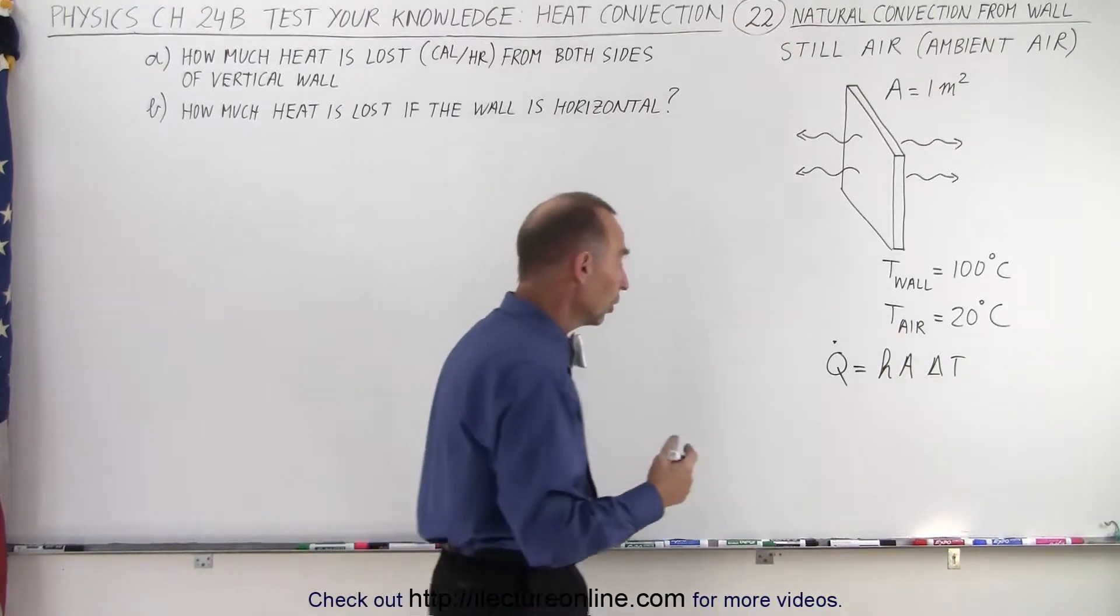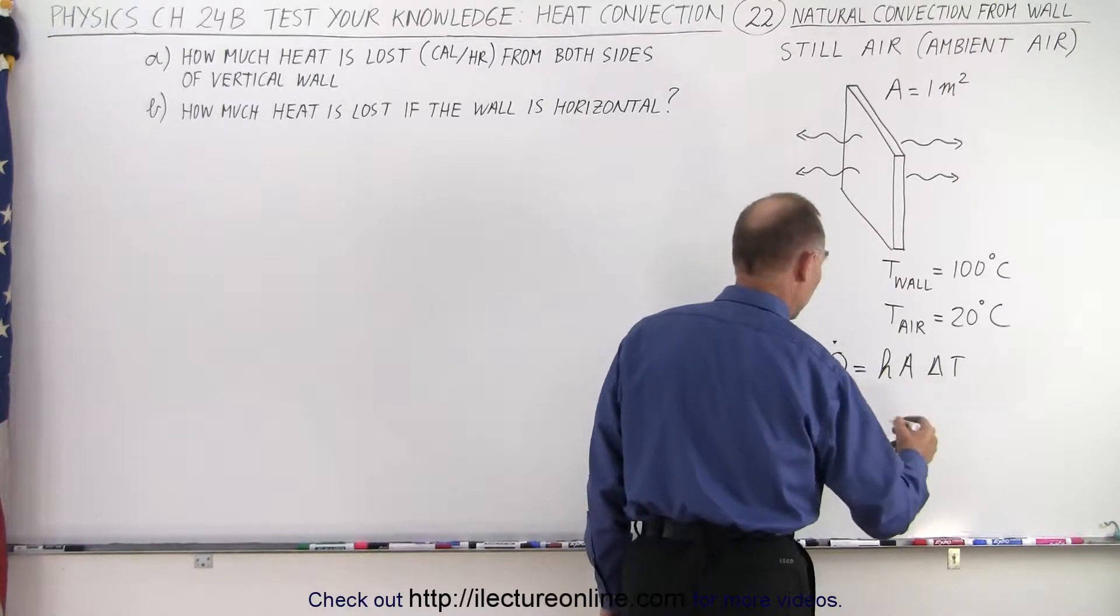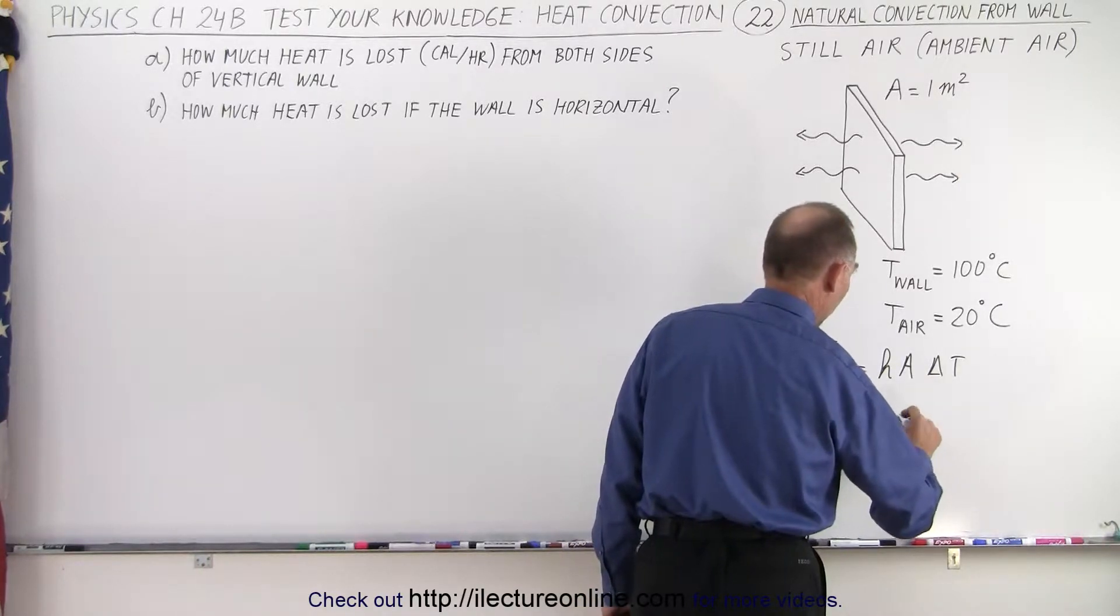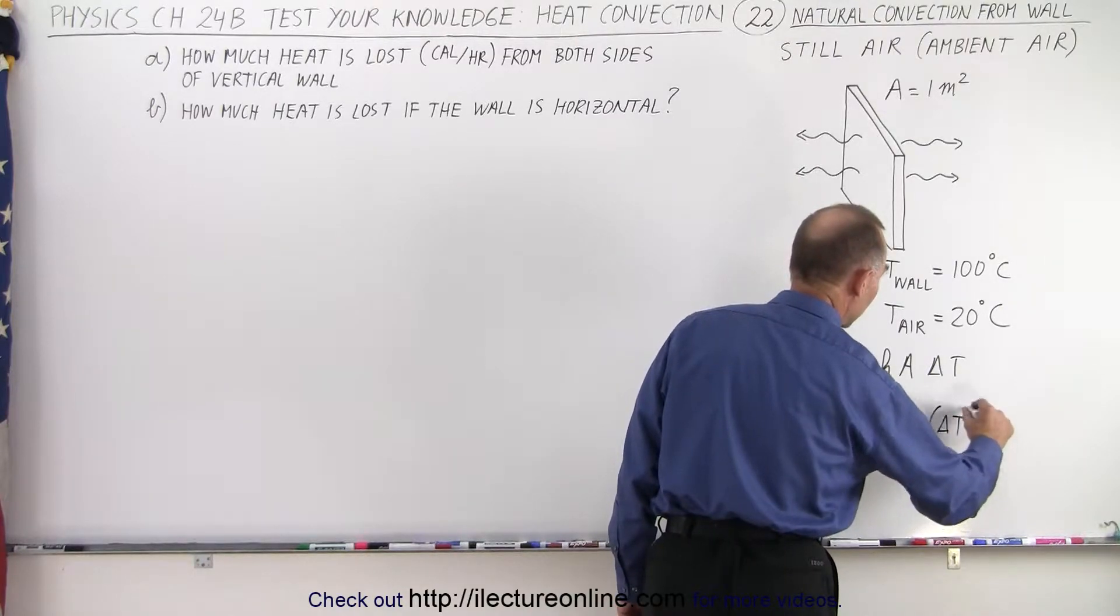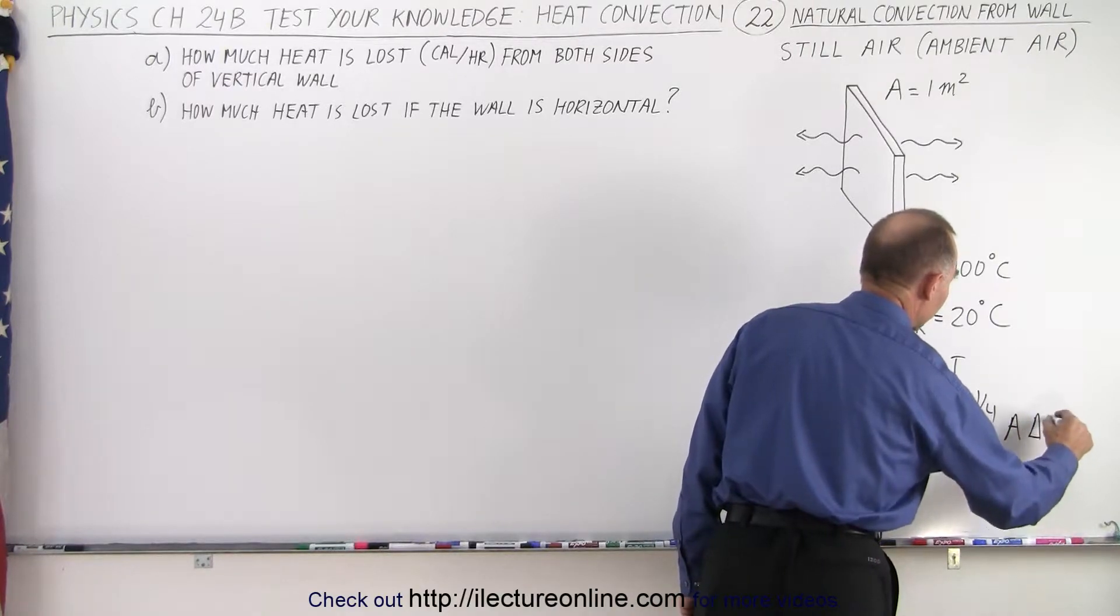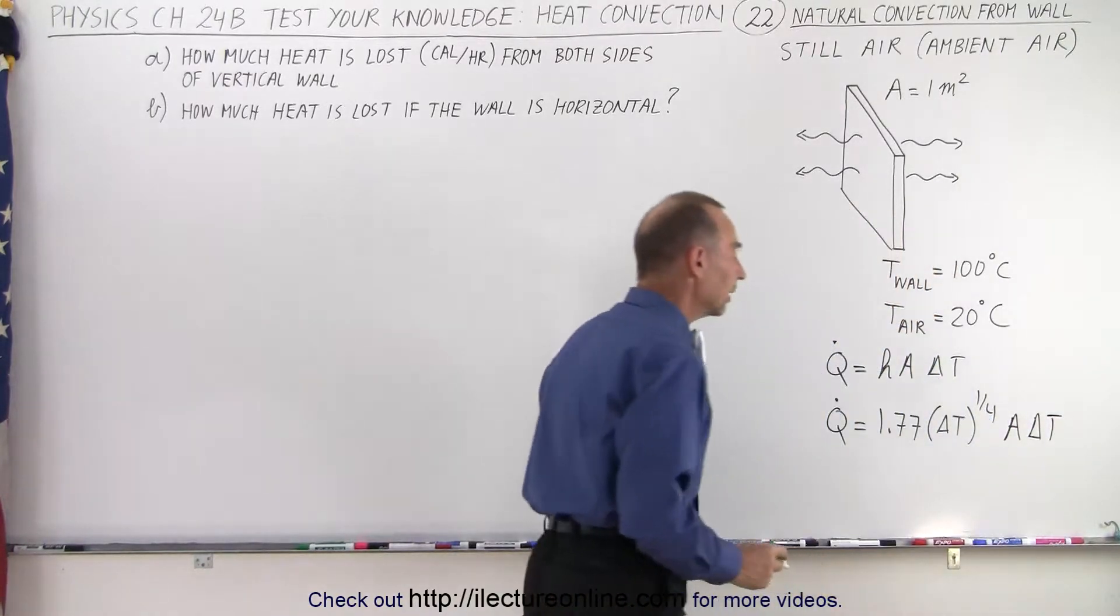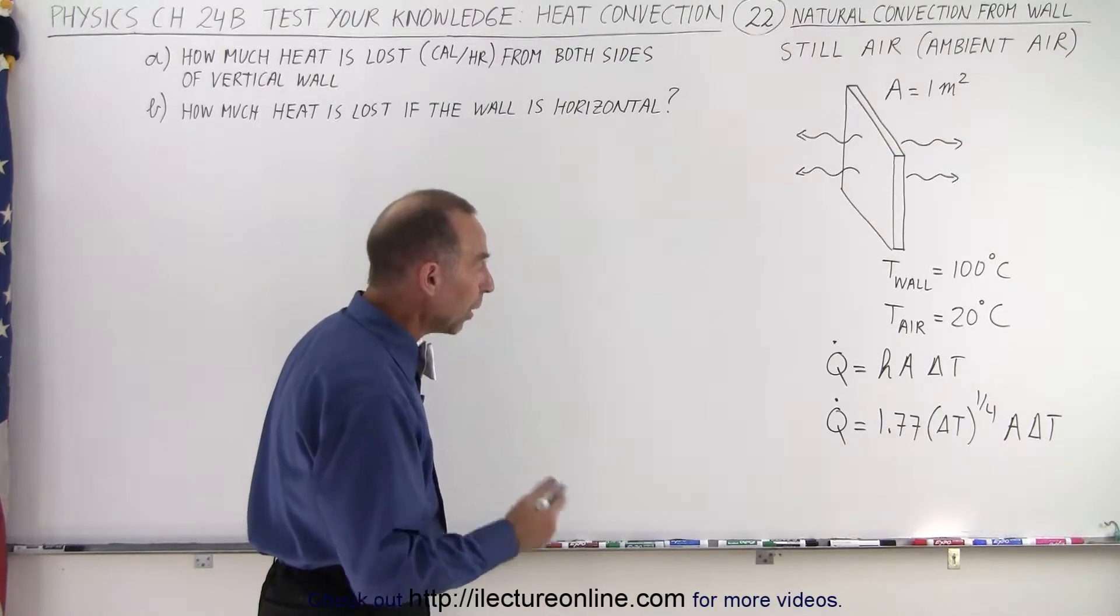And we can use an old equation, Q dot, which is still fairly accurate, where we can take H to be 1.77 times delta T to the one-quarter power, and multiply it times the area times delta T. And of course, that would be in terms of joules per second or watts.